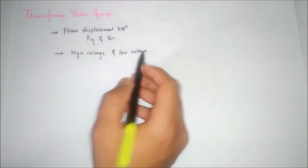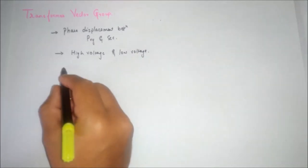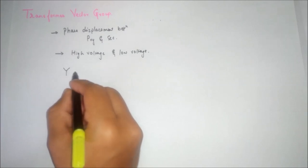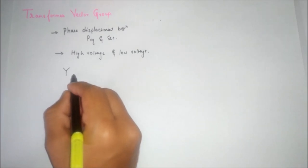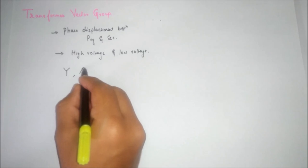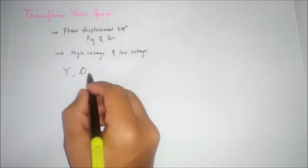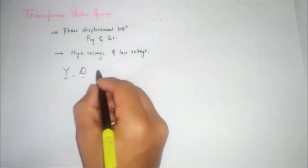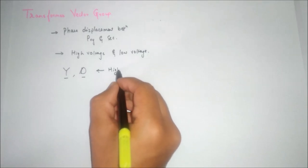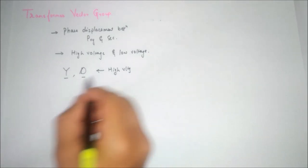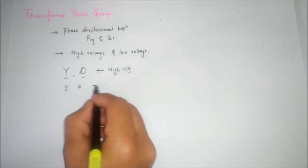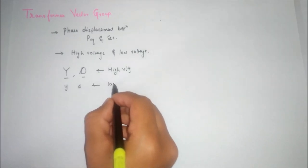अगर capital letter में लिखा है — for example Y (star) या D (delta) — तो ये high voltage है। और अगर small letter में लिखा है तो ये low voltage है।